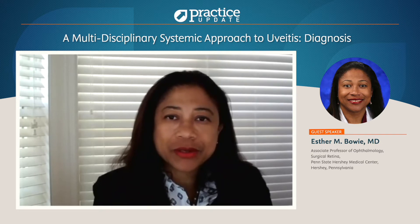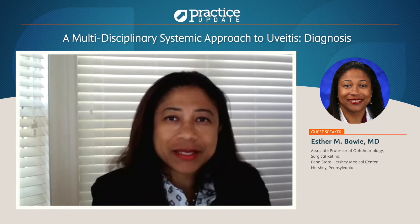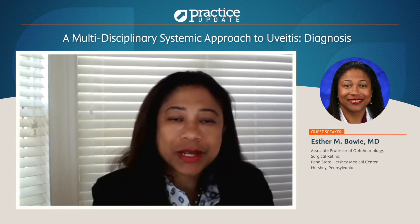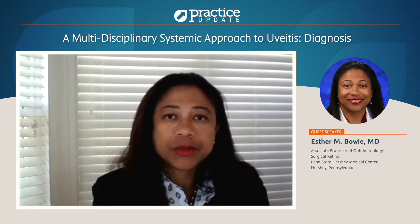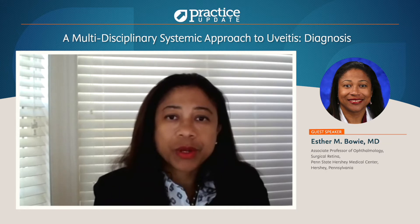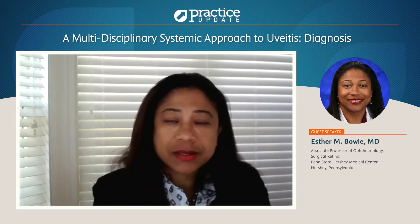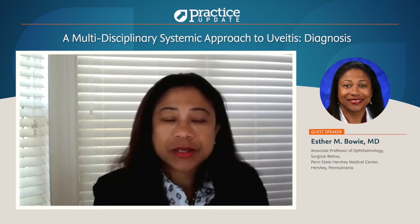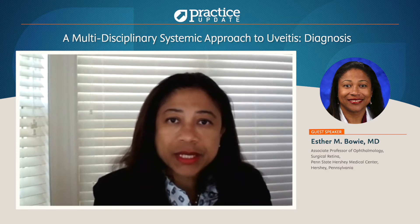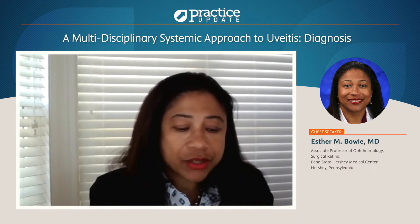I think about uveitis as a systemic disorder — it's inflammation we see in the eye, but it usually indicates that something else is going on in the rest of the body. It really is a multidisciplinary approach. You work a lot with rheumatologists, with infectious disease, because syphilis can present as uveitis. We also work with oncologists because lymphoma can present as uveitis.